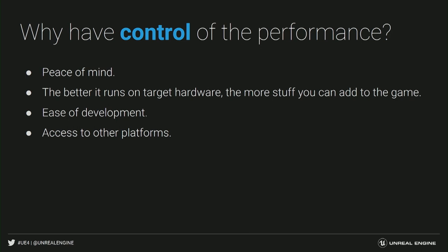Before we start, I would like to go over some important things and why you should have control of the performance of your game. First of all, peace of mind is really important. Over the course of development, it's nice to know that your game is performing across a large number of platforms. It's also very good when you're able to think about performance and optimization since the very beginning of the project. You should really think of this like an investment — the earlier you start, the bigger the space you have at the end of the development cycle to add more things to your game or be focused on the final stages and final tuning to make it really great.